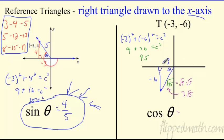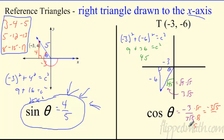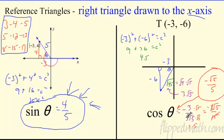So the hypotenuse is three radical five. Now find the cosine of theta: it's adjacent over hypotenuse, so negative three over three radical five. That's not fully simplified — we don't want a radical in the denominator. Multiply by radical five over radical five: negative three radical five over fifteen, which reduces to negative radical five over five. That is the exact cosine of theta.